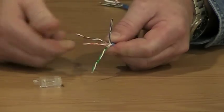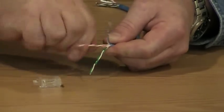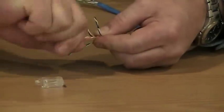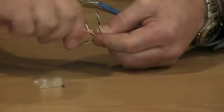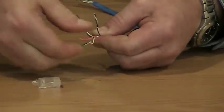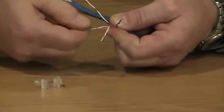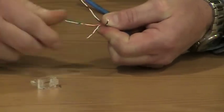Now we need to untwist these pairs. When we untwist these pairs, we need to make sure we untwist all the way down. Don't want to twist nothing inside the jacketing. The standards tell us that we have to leave no more than a half inch untwisted per pair when we make a connection up.